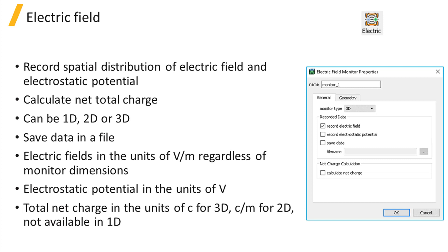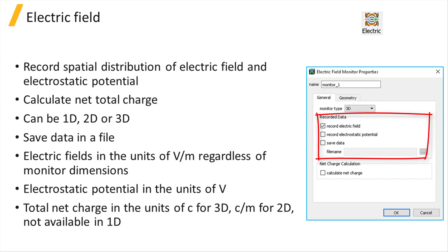The electric field monitor records the spatial distribution of the electric field within the monitor region as well as the electrostatic potential. It can also calculate the net total charge within the monitor space using Gauss's law. The monitor geometry can be 1D or linear, 2D, or 3D. The user has the option to save electric field or electrostatic potential or both, and can opt to save the results inside a separate file in addition to the simulation environment.